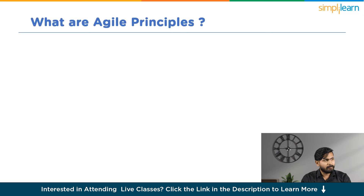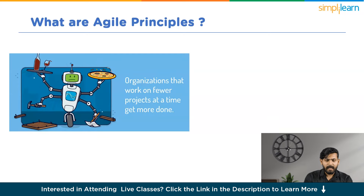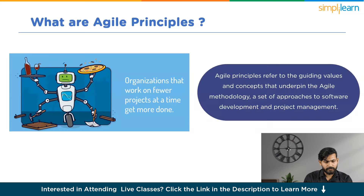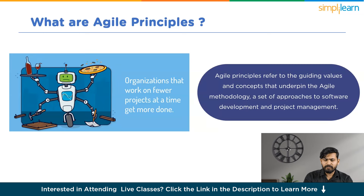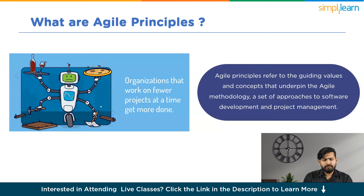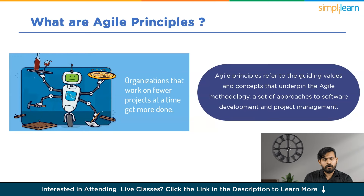So first, let us discuss what Agile Principles exactly are. Basically, Agile Principles refer to the guiding values and concepts that underpin the Agile methodology, which is a set of approaches to software development and project management. The Agile Manifesto, created in 2001 by a group of software developers, outlined these principles. The manifesto emphasizes flexibility, collaboration, and customer satisfaction over rigid processes and documentation.